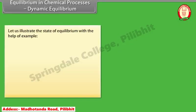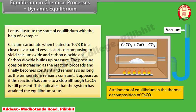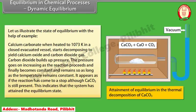To illustrate the state of equilibrium: calcium carbonate, when heated to 1073 Kelvin in a closed evacuated vessel, starts decomposing to yield calcium oxide and carbon dioxide gas. Carbon dioxide builds up pressure. The pressure goes on increasing as the reaction proceeds and finally becomes constant as long as the temperature remains constant. It appears as if the reaction has come to a stop, although CaCO₃ is still present. This indicates that the system has attained the equilibrium state.